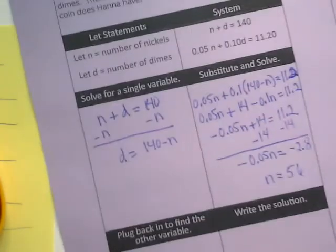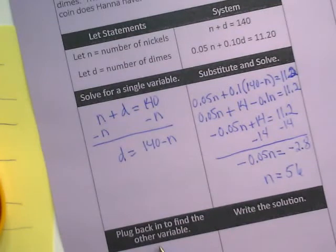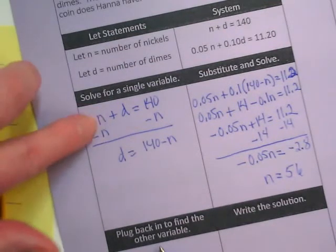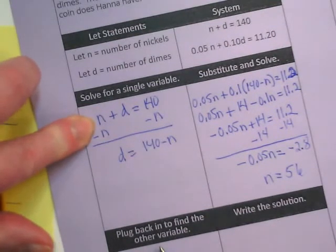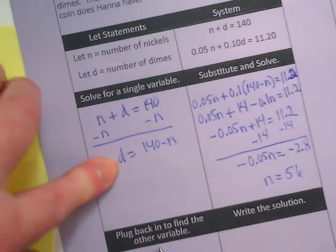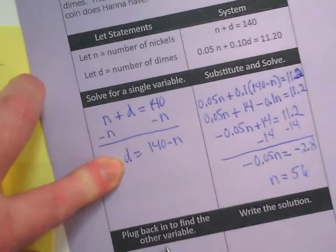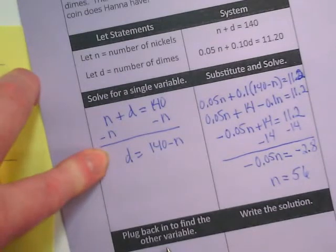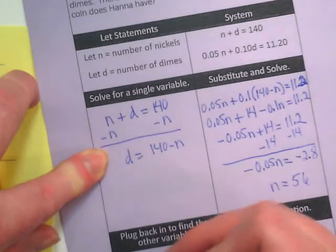Next part of our graphic organizer, plug back in to find the other variable. I can take the first equation in the first form, or I can take it in the form where I isolated the variable. I like this one because the D is on one side, and that's what I need.